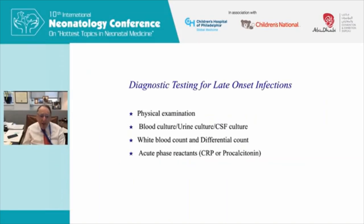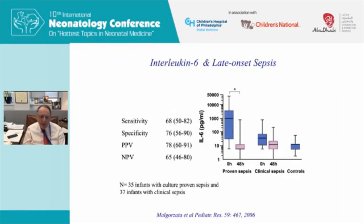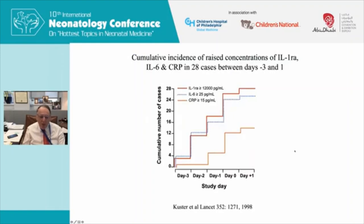How do you diagnose these infections? Physical examination is the top of the list, and when you're concerned you get a blood culture, urine culture, and — for late-onset infections — CSF culture not routinely unless the baby is not responding to usual antibiotic therapy or there's a positive blood culture. Then laboratory testing: white count, differential count, and acute phase reactants such as C-reactive protein or procalcitonin. For many years interleukins and cytokines have been considered as a way to diagnose infection. Interleukin-6 goes up very quickly and comes down very quickly in proven sepsis, with numbers significantly higher than controls.